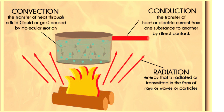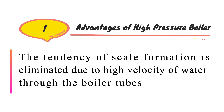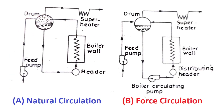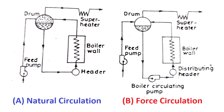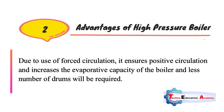Now, what are the advantages of the high pressure boiler? The first advantage is that the tendency of scale formation is eliminated due to the high velocity of water through the boiler tubes. Since forced circulation is used, as discussed in the unique features, the high velocity eliminates scale formation.